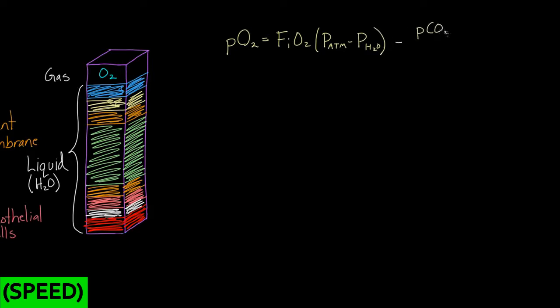This first equation is the alveolar gas equation. The first part tells us how much oxygen is going into the alveolus. This is our alveolus right here. This is how much oxygen is going in, and the second bit is how much is going out. If you subtract what's going in from what's going out, you're left with the partial pressure of oxygen in that gas space, PO2. This is a nice segue for our second equation.